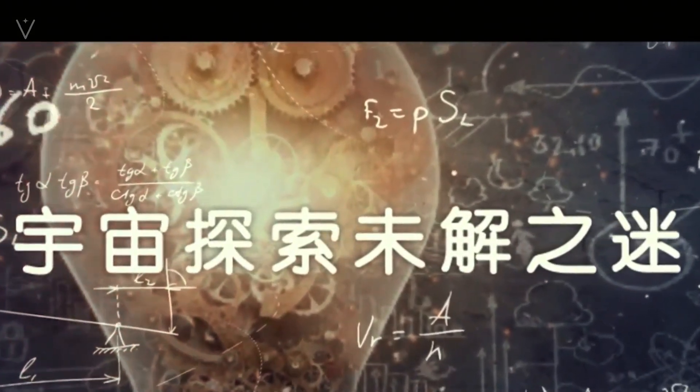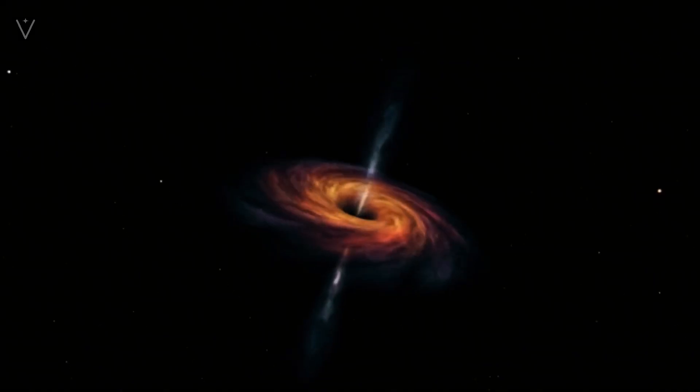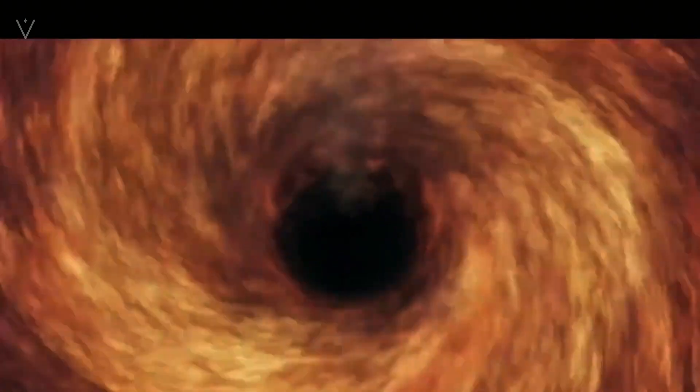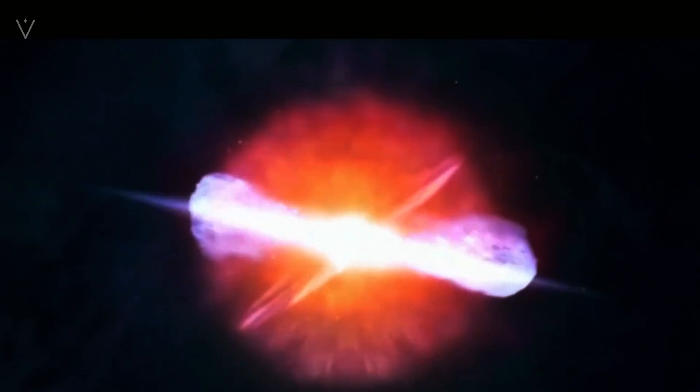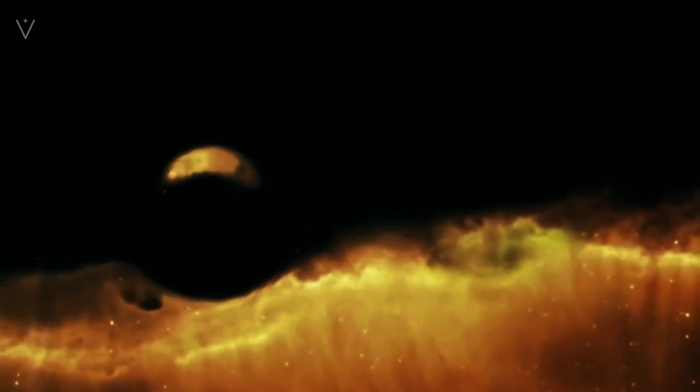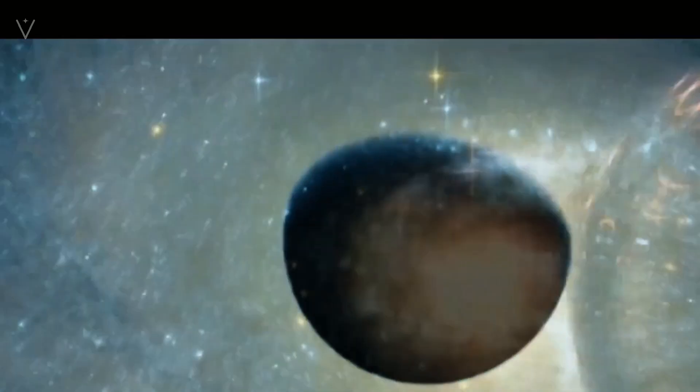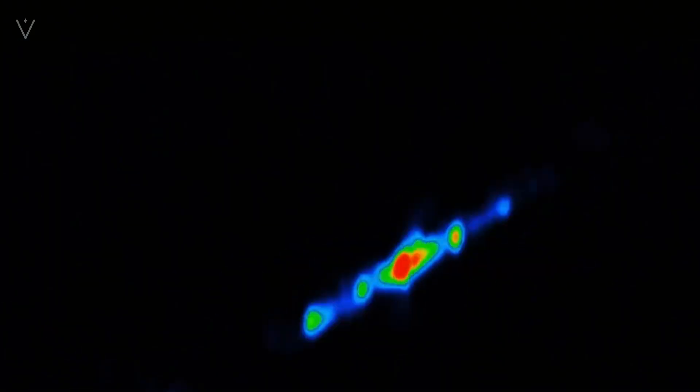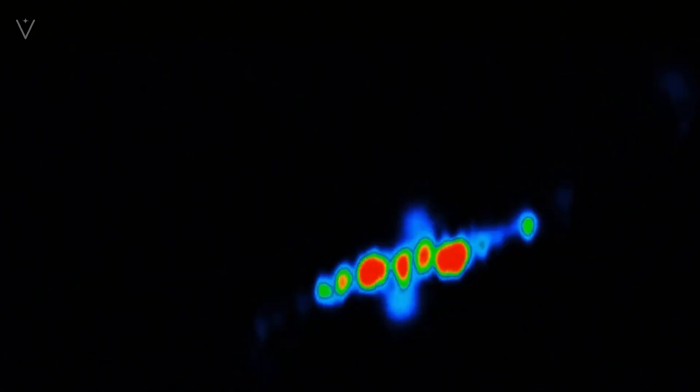It must be said that although Saturn and Jupiter look very large when placed at the position of the Moon, they are actually much smaller than the real giants in the universe. For example, UY Scuti is a red supergiant star located in the constellation Scutum. Its radius is estimated to be 1,708 times the radius of the Sun, so its volume is nearly 5 billion times that of the Sun. In general, the universe is vast and has infinite power. Mysterious things attract us to explore the secrets hidden in them.